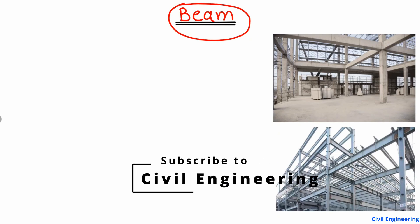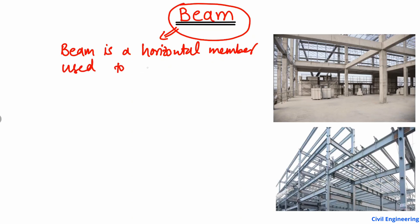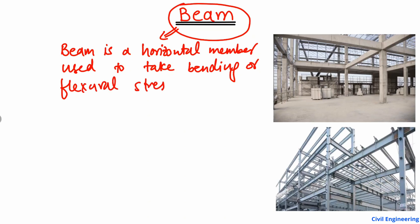You might have heard this word very commonly in civil engineering because it's the main structural element in any kind of building. In simple terms, a beam is a horizontal member used to take bending or flexural stresses. It's very important to keep in mind that a beam is always a horizontal member, and it is used to take bending or flexural stresses.